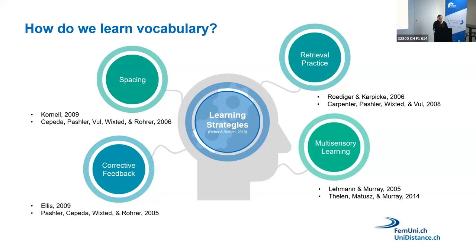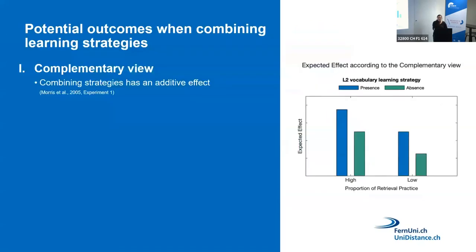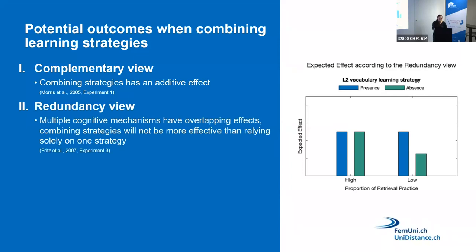Mobile phone applications combine these strategies, but the research literature on combining them is small. There are potential outcomes to consider. The most desirable is the complementary view: when you manipulate the proportion of retrieval and combine another learning strategy on top, there is an additive effect. However, there is also the redundancy view, where this additive effect does not emerge because multiple cognitive mechanisms overlap — making just one strategy sufficient.